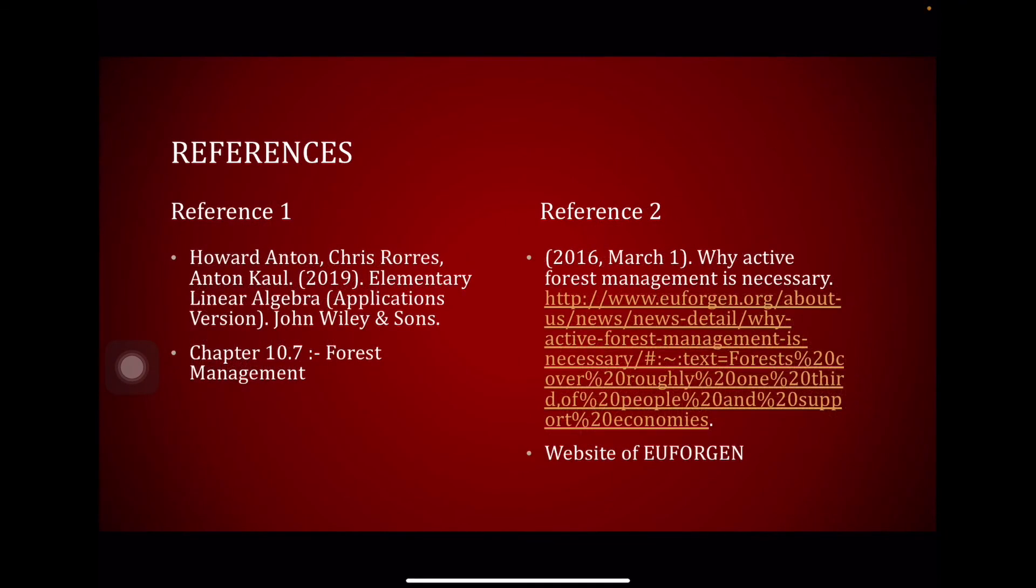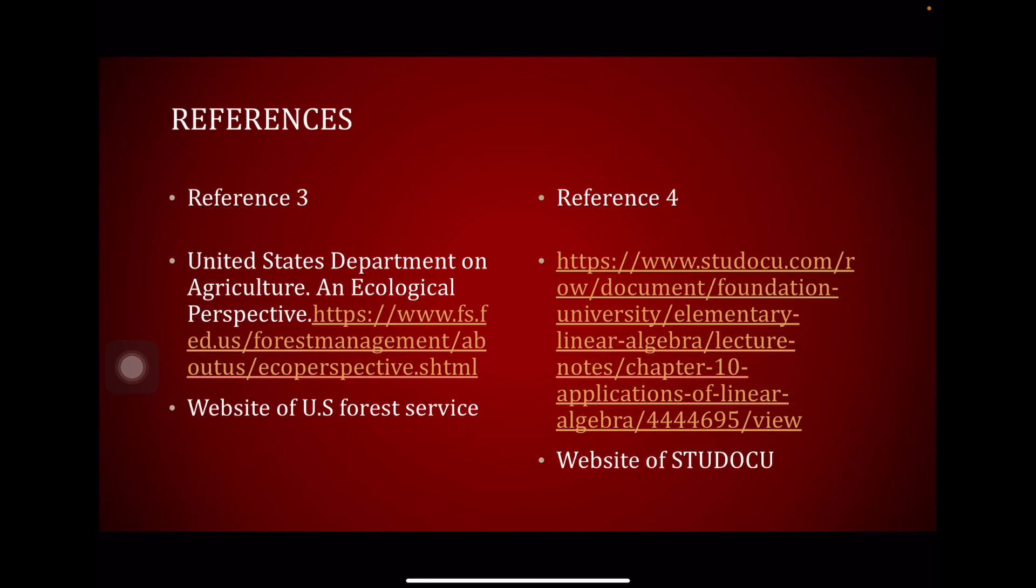This is our references. Our reference one is textbook elementary linear algebra application version focusing on chapter 10.7 under forest management. This is our main reference. Our reference two is article why active forest management is necessary. It is a website of the European Forest Genetic Resources Programme or Euforgen. This is for our extra reading about our application that we choose for this assignment. Next we also have reference three which is United State Department on Agriculture and Ecological perspective. Also, for extra reading for our application.